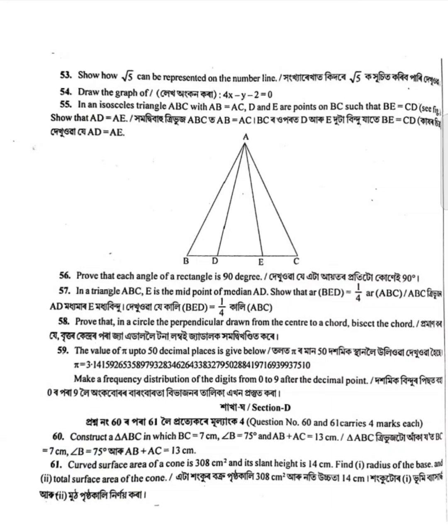Of the three number questions, can there be representation on the number line? Prove that each angle of a rectangle triangle is 90 degrees. Next question: the value of 550 decimal places given below.